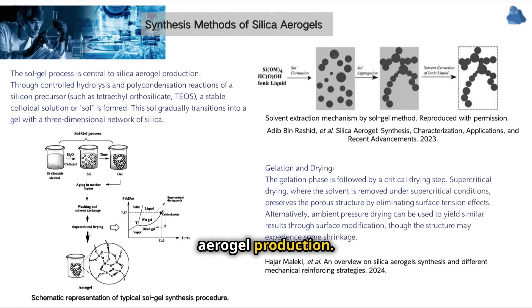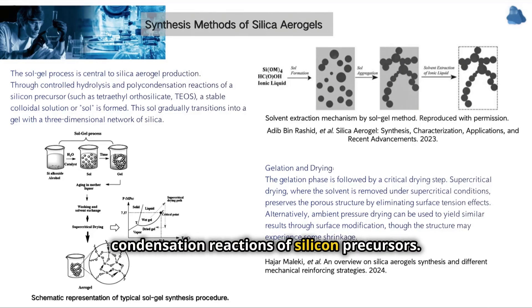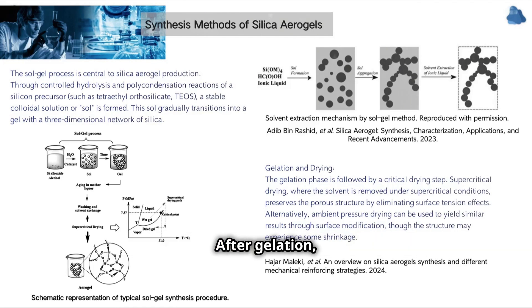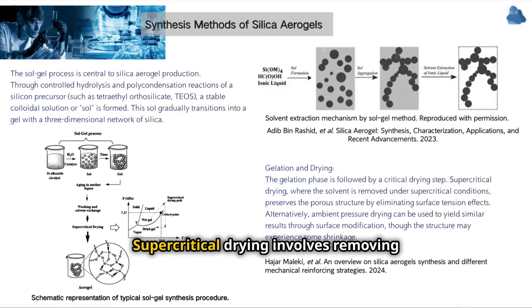The sol-gel process is the core of silica aerogel production. A stable colloidal solution, or sol, is formed by controlled hydrolysis and condensation reactions of silicon precursors. This sol is gradually transformed into a gel with a three-dimensional silicon network. After gelation, the liquid is removed by a critical drying step to avoid structural collapse.